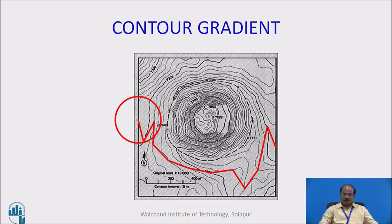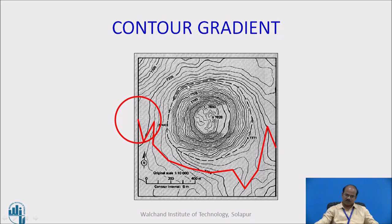Another important application of the contour map is that of drawing a contour gradient. This is very important when we are passing a road through a hilly terrain, or we are passing a channel of desired gradient or railway line of desired gradient across a land surface with varying terrain. This particular contour map is having a contour interval of 5m throughout and contours have been labelled at every 25m interval. Here the scale has been given as 1 to 10000, that means 1cm is equal to 100m. Graphically also scale has been shown.